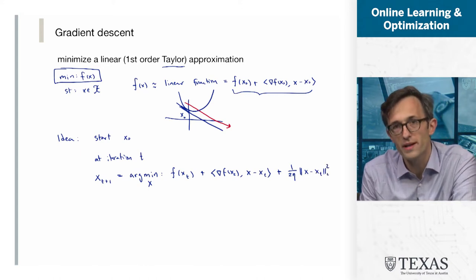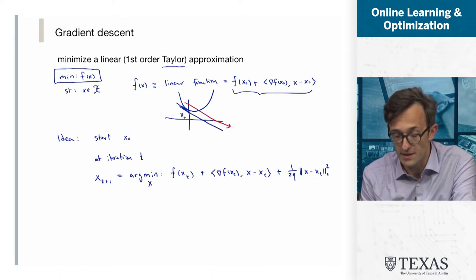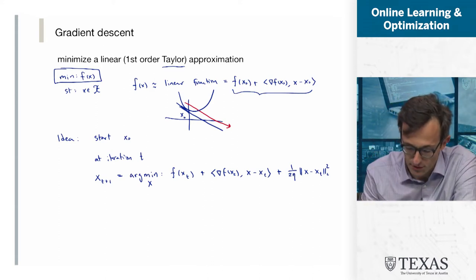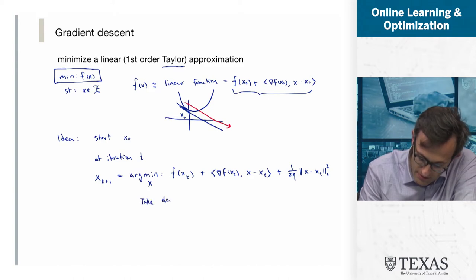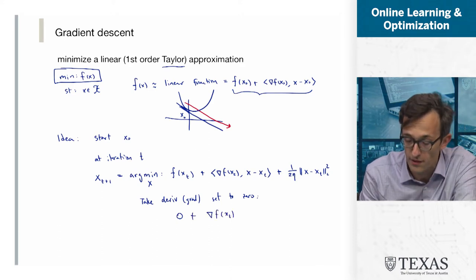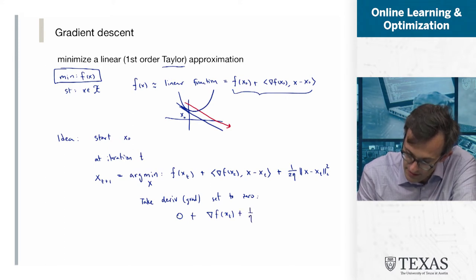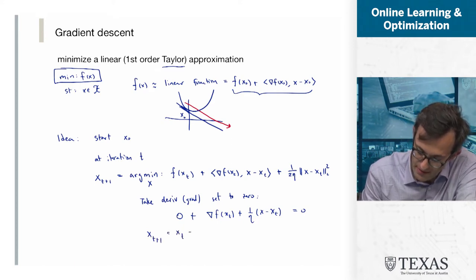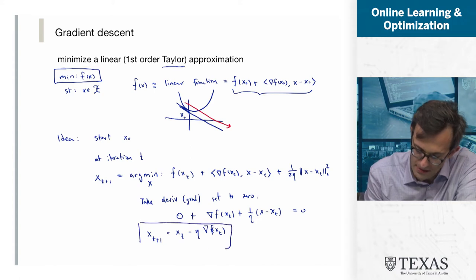This is my linear function plus a quadratic term that penalizes x being very far from x_t. This is a very simple quadratic, so we can solve it by taking the derivative and setting it equal to 0. Taking the gradient and setting to 0, we get: gradient f(x_t) plus (1/η)(x − x_t) = 0. This gives us that x_{t+1} equals x_t minus η times the gradient of f at x_t. And this is exactly the gradient descent algorithm.